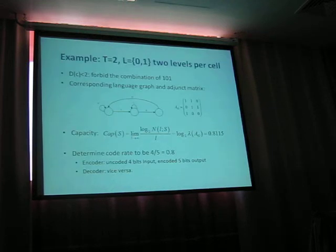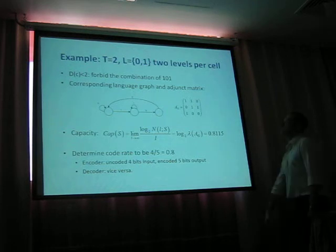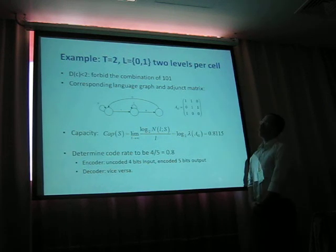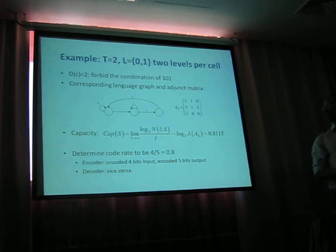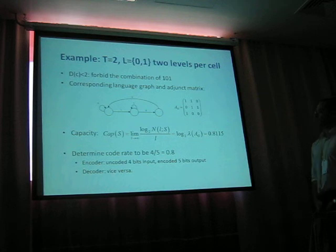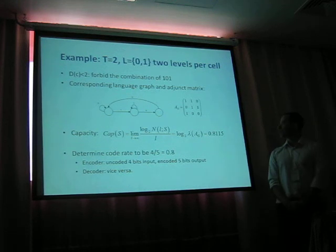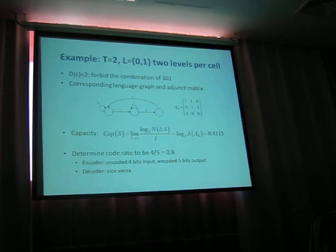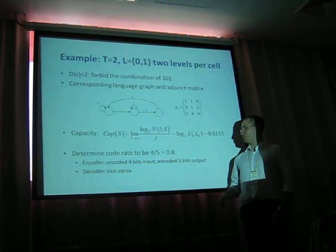The next step is to determine T and code rate. Let's take, for example, a flash cell with two levels, SLC. We want to restrict DC to be smaller than 2. DC equal to 2 can be reached by programming data that consists of 1, 0, 1. We want to restrict this combination. So we have the corresponding language graph and adjacency matrix, and we calculate the capacity of this language, and it's 0.8115.